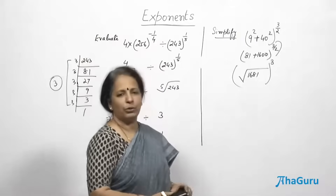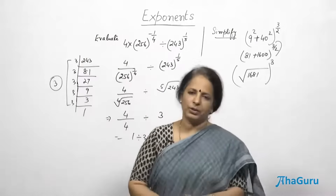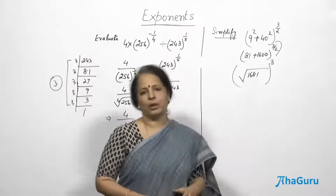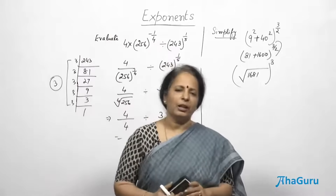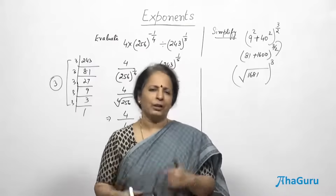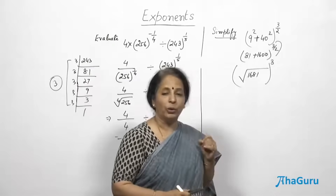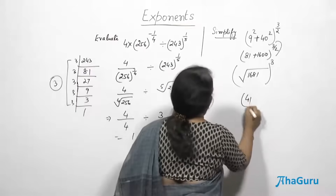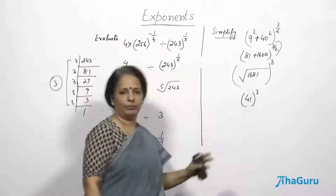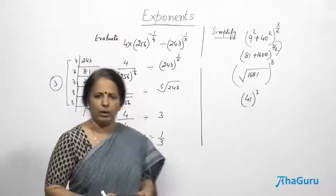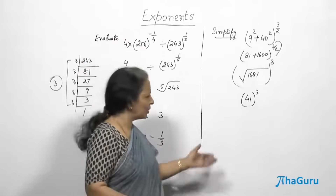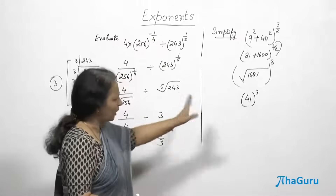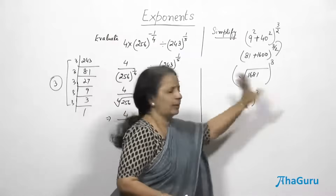We need the square root of 1681. Since it is a four-digit number, use the long division method — do not use prime factorization for big numbers, as it takes too long. Using long division, you get 41. So the simplified answer is 41 cubed. Since the question says simplify — not evaluate — do not multiply 41 × 41 × 41. This simplified form with a nice base and positive power is sufficient.